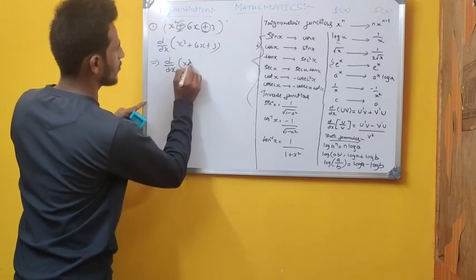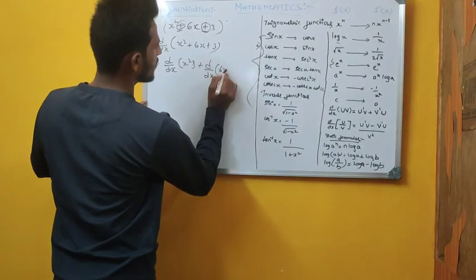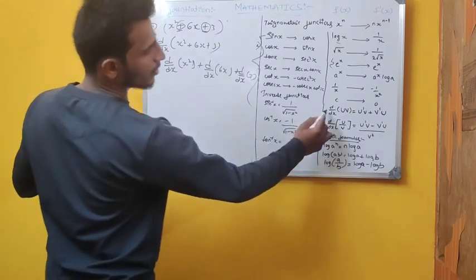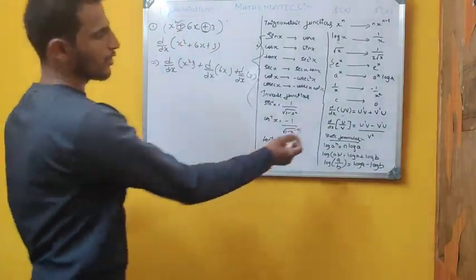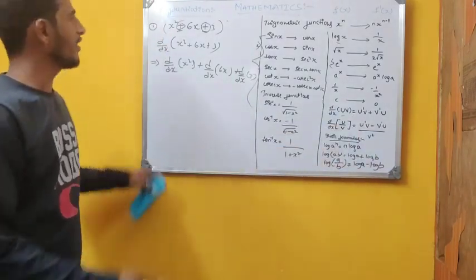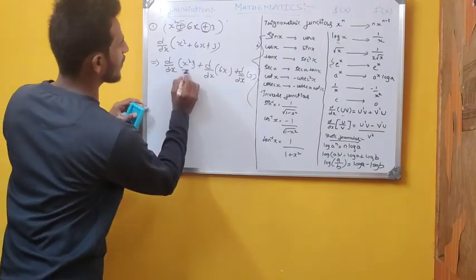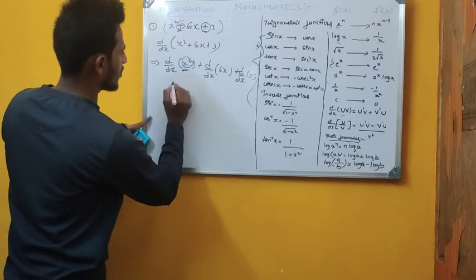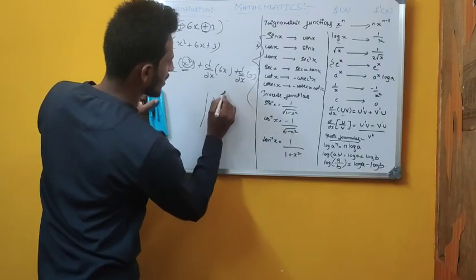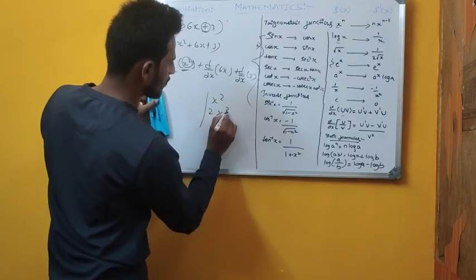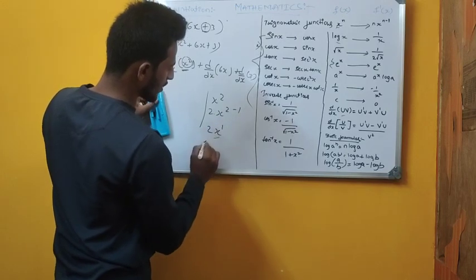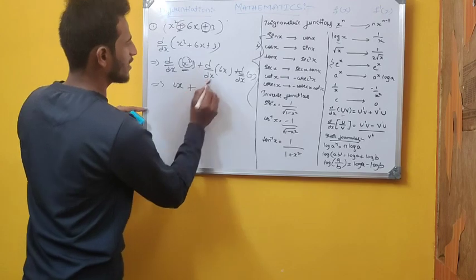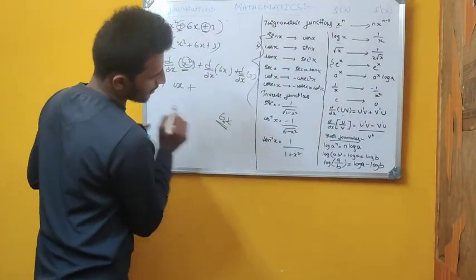So d/dx of (x² + 6x + 3) = d/dx(x²) + d/dx(6x) + d/dx(3). For x², it is in the form x^n, so the differentiation is n·x^(n-1). Here n = 2, so it becomes 2·x^(2-1) = 2x.